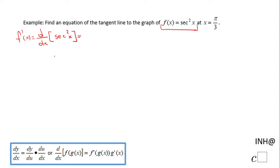And that will allow us to have 2 times secant of x to the power of 1 because we drop 1 from these 2. And then by the chain rule, which you see down here,